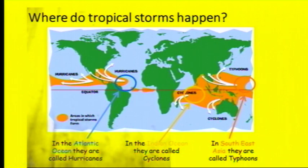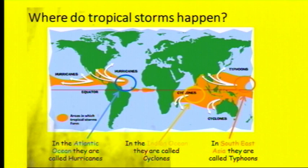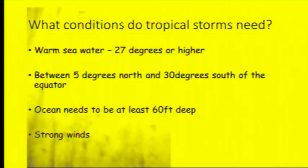Because typhoons and hurricanes are in the northern hemisphere, they're going to travel west and then north. Cyclones are in the southern hemisphere, so they are going to travel west and then south — they travel the opposite way because of the Earth's rotation, depending on the hemisphere they're in.